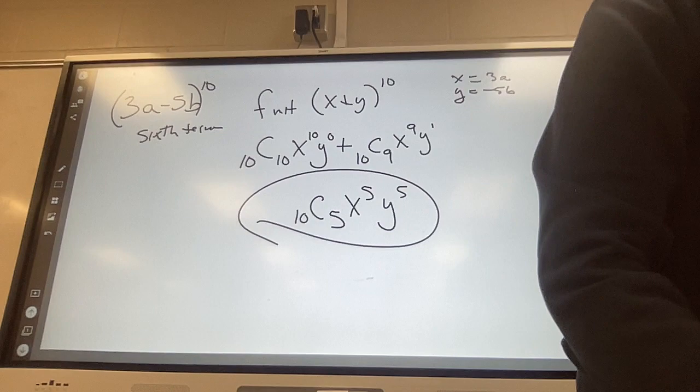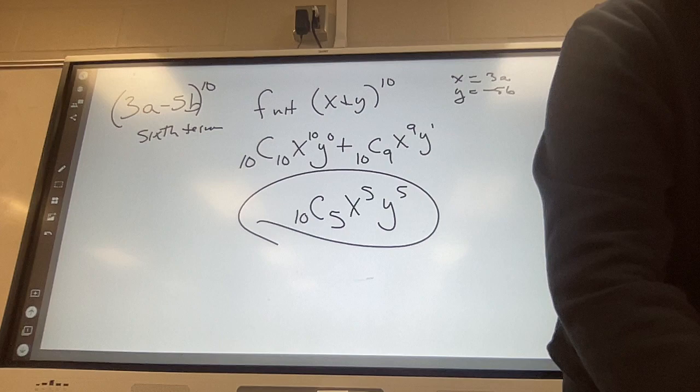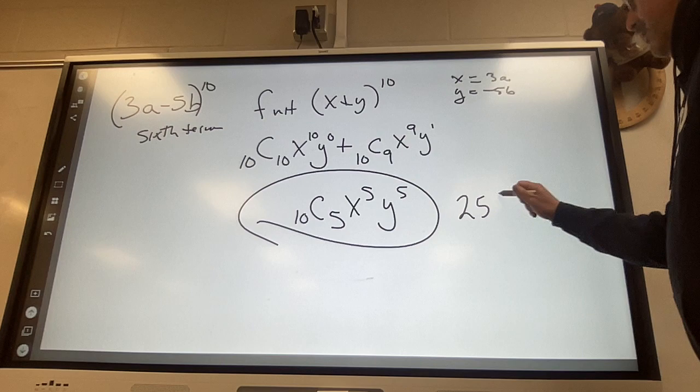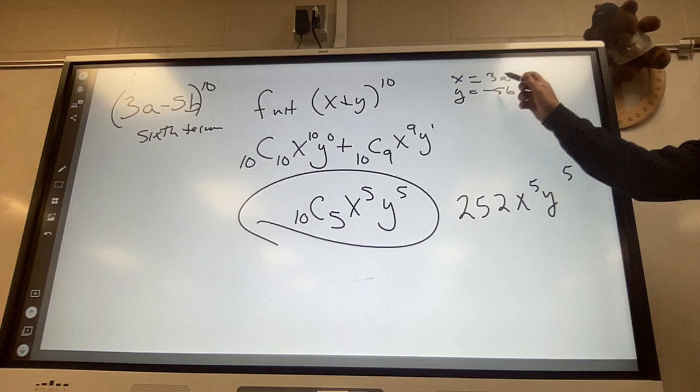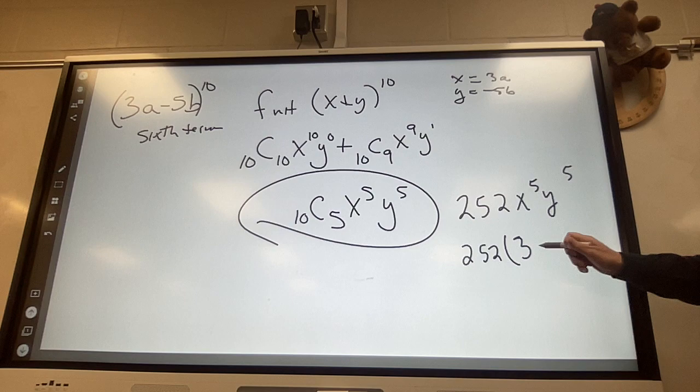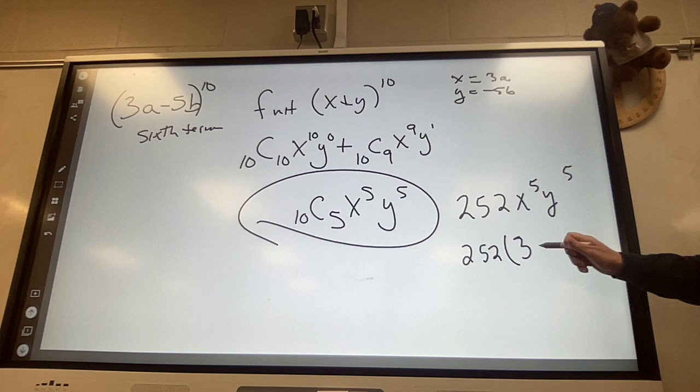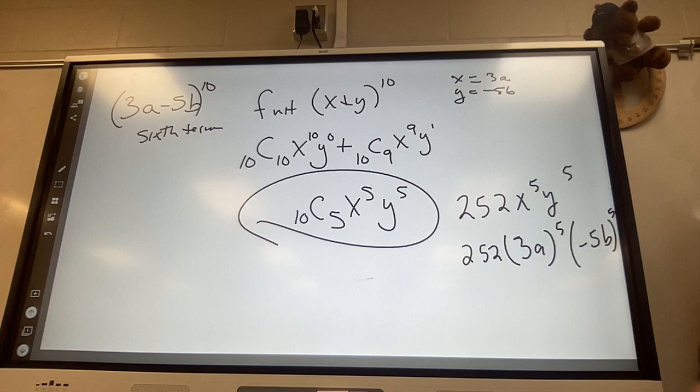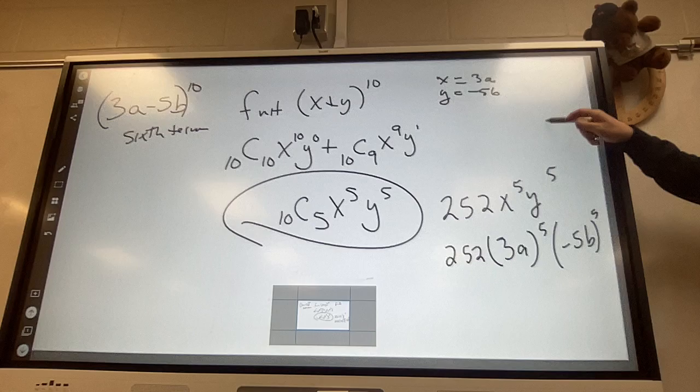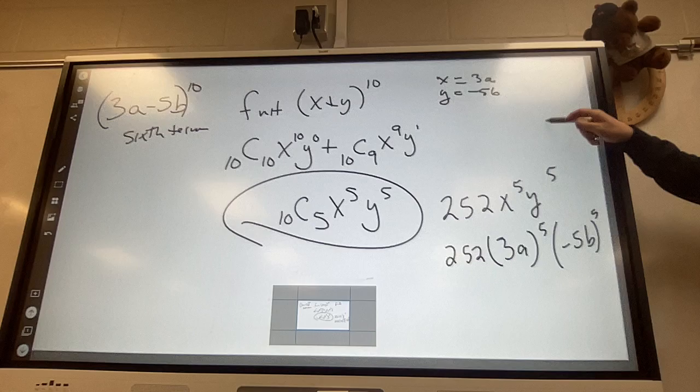Here we go. Combination. Ten combination five. Two hundred and fifty-two. X to the fifth, Y to the fifth. And then we substitute. Two fifty-two, we substitute. Three A to the fifth. By the way, the one on your worksheet gets like into exponential notation. Five B to the fifth. And you would need to take two fifty-two times three to the fifth times parentheses negative five to the fifth to get some huge number. Cool.